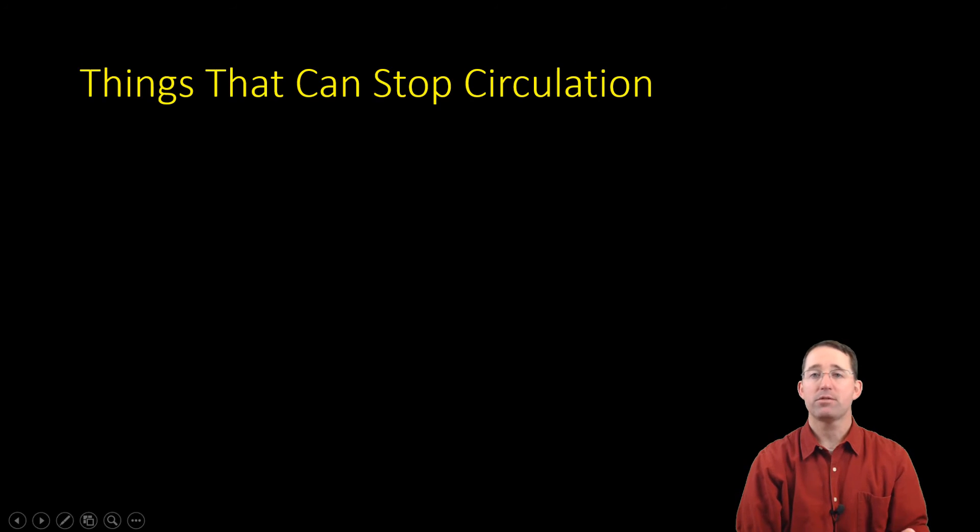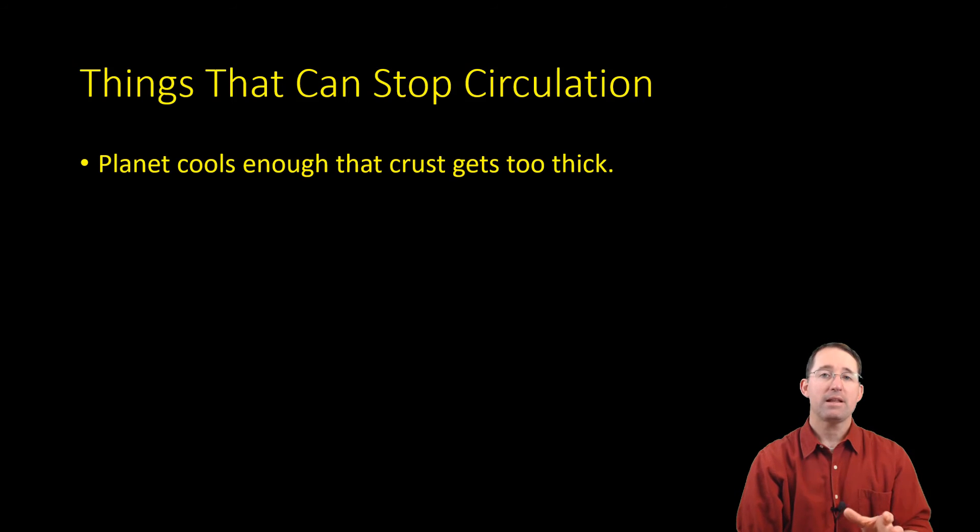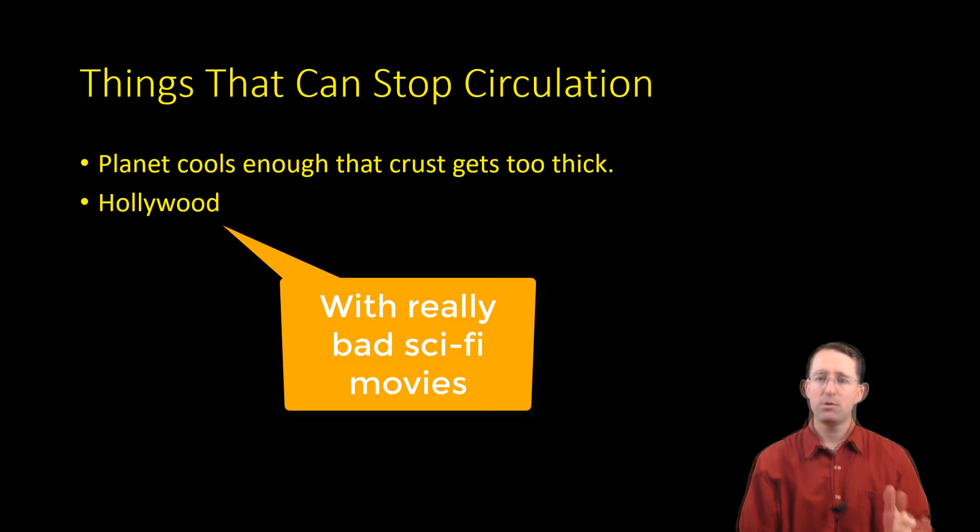What are some of the things that can stop this circulation pattern? Well, there are really only two things. One is that the planet can continue to cool down until its crust gets too thick. As that crust thickens on the outside, it is more and more difficult for material to rise up from deep in the planet's interior. If the crust is too thick and that material can no longer reach the surface, it basically cuts off or halts that circulation pattern. This can have an effect on what's happening at the surface, and can even result in the magnetic field of the planet shutting down due to a lack of circulation. The other thing that can stop circulation in a planet is Hollywood. Good job, Hollywood.